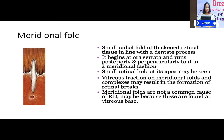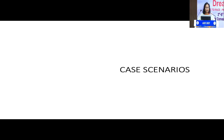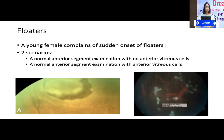This is an example of a meridional fold associated with a hole at the apex. There are also uncommon findings like bays, pearls, and honeycombs. In a case scenario — a young female presenting with sudden onset floaters — there can be two scenarios: a normal anterior segment examination with no anterior vitreous cells, or a normal anterior segment examination with anterior vitreous cells. Without vitreous cells, we look for retinal breaks or tears causing RPE pigment dispersion and floaters.